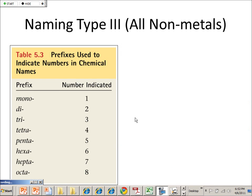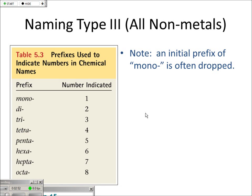So we have type 3. This is when two non-metals are bonded to each other, and there's a lot of ambiguity here — a lot worse than when we had non-metal and metal, because there really isn't a charge involved anymore. I can't do the accounting I was using before, where the charges have to balance. So we have to add even more information into the names.